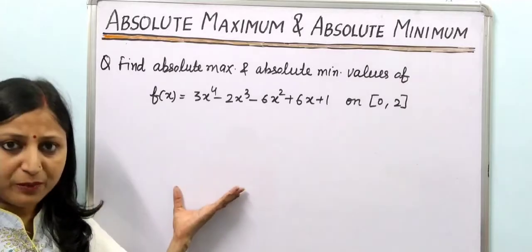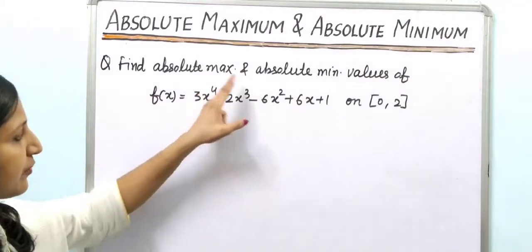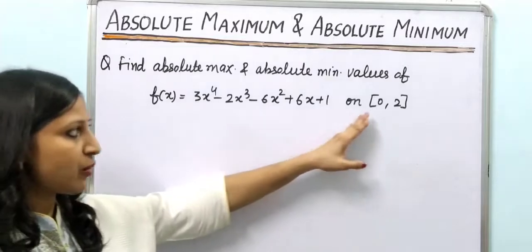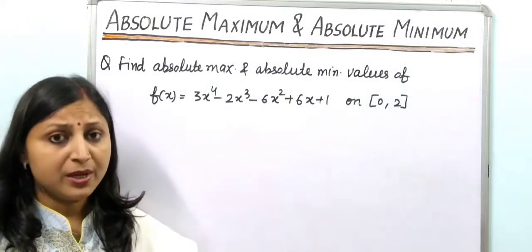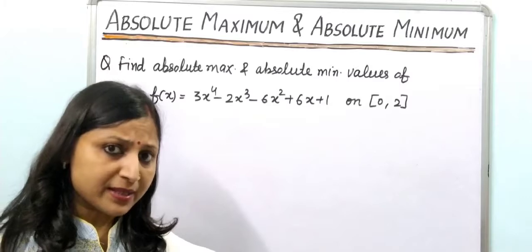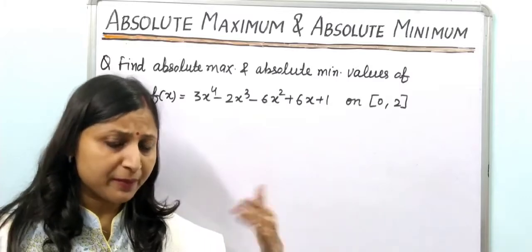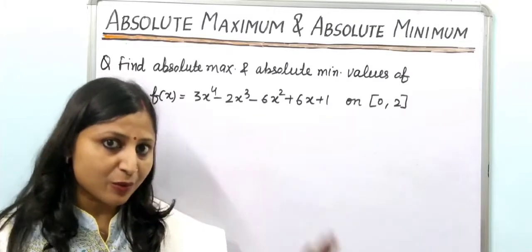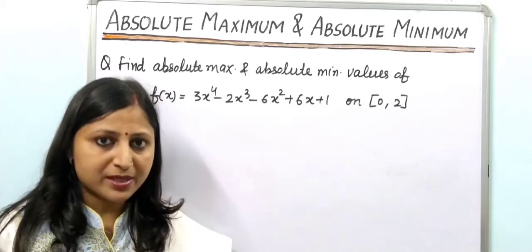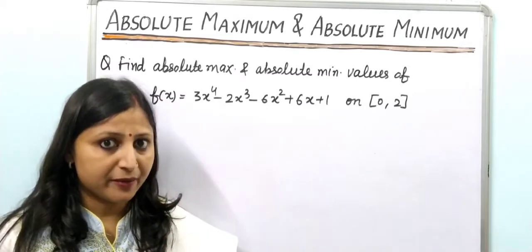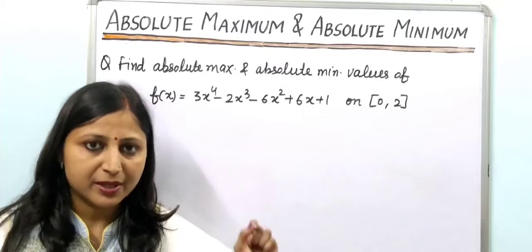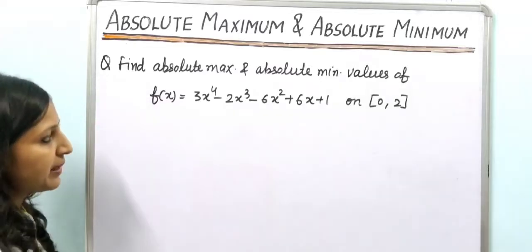Now let us move to questions. The first question is: find absolute maximum and absolute minimum values of a given function on the interval [0, 2]. An important note: absolute maximum and absolute minimum are discussed on a closed interval, whereas local maximum and local minimum are discussed on an open interval. That is a very basic difference.